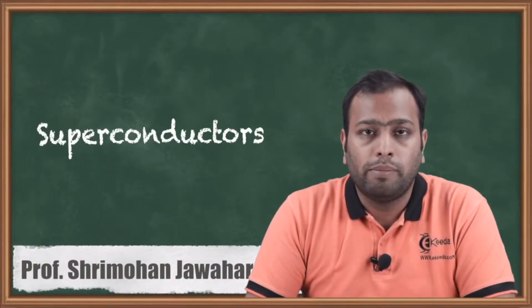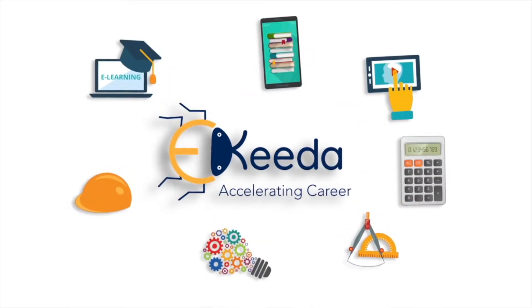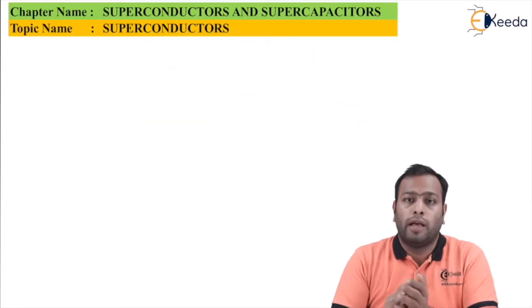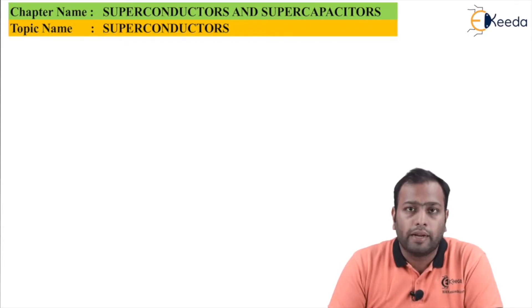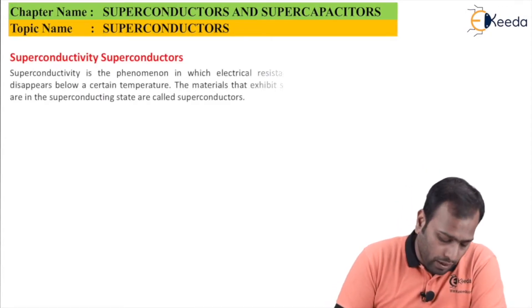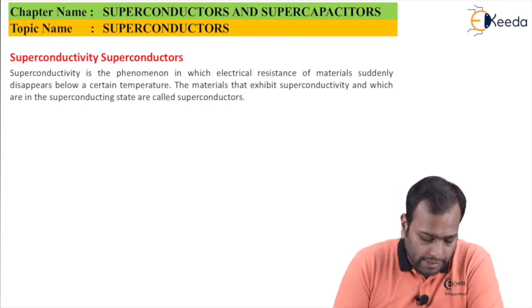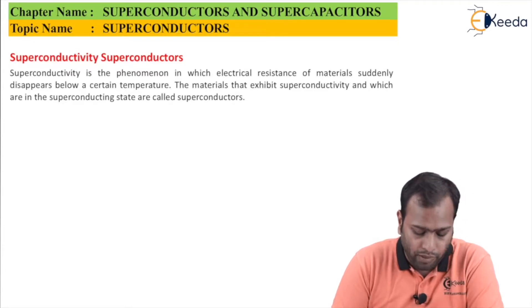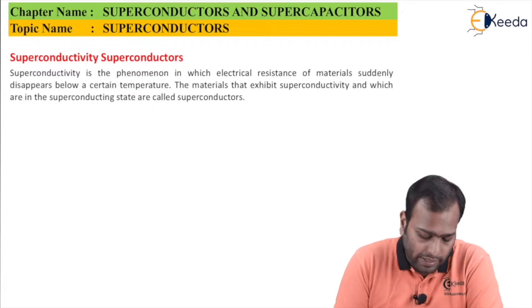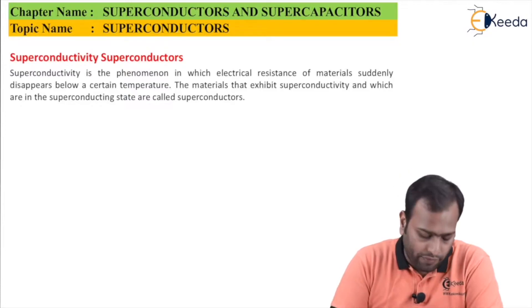In today's class we will be exploring superconductors and their basic principles. Superconductivity is the phenomenon in which the electrical resistance of a material suddenly disappears below a certain temperature. The materials that exhibit superconductivity and which are in a superconducting state are called superconductors.